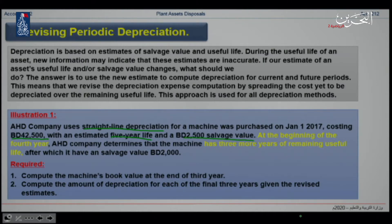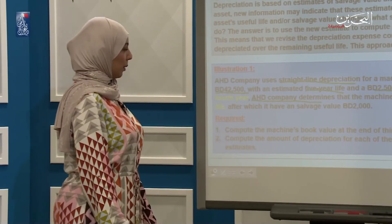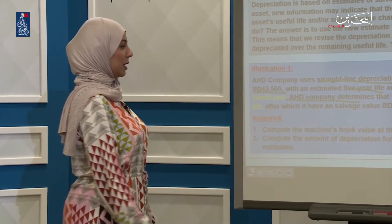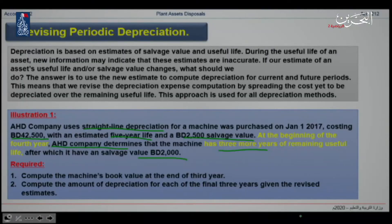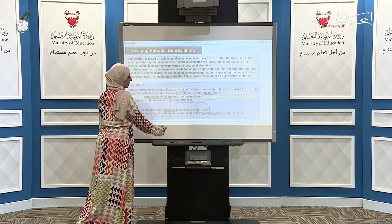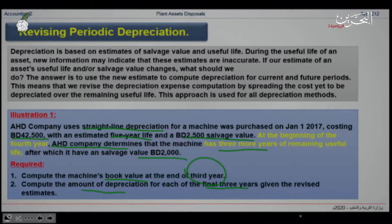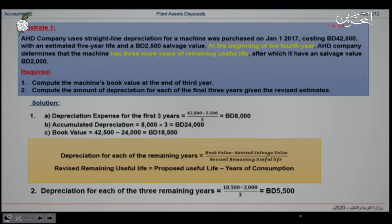At the beginning of the fourth year, AHD company determined that the machine has 3 more years of remaining useful life, after which it has a salvage value of $2,000. We are required: first, to compute the machine's book value at the end of the third year; and second, to compute the depreciation for each of the final 3 years given the revised estimates. Now let us see the answer.